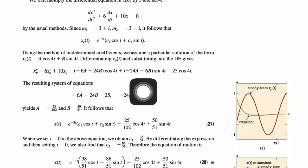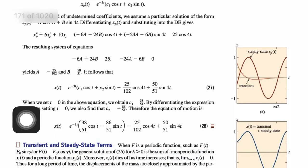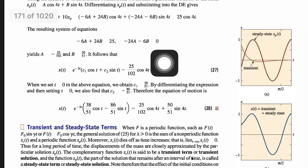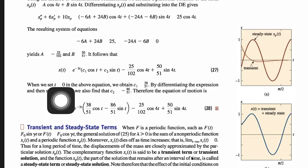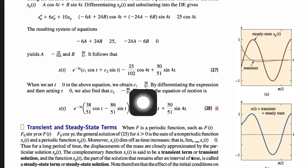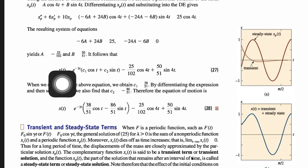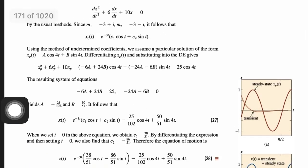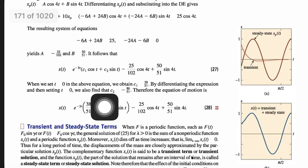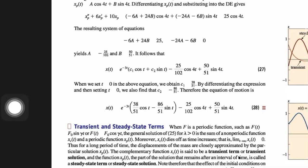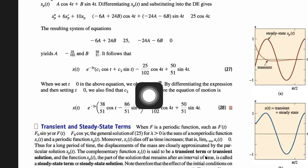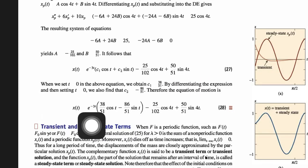Now I apply the initial conditions to find c₁ and c₂. Putting t = 0 into the general equation gives c₁ = 38/51. Differentiating the general equation and putting x'(0) = 0 into the derivative gives c₂ = −86/51. Substituting these two values back into the general equation gives the final complete solution.